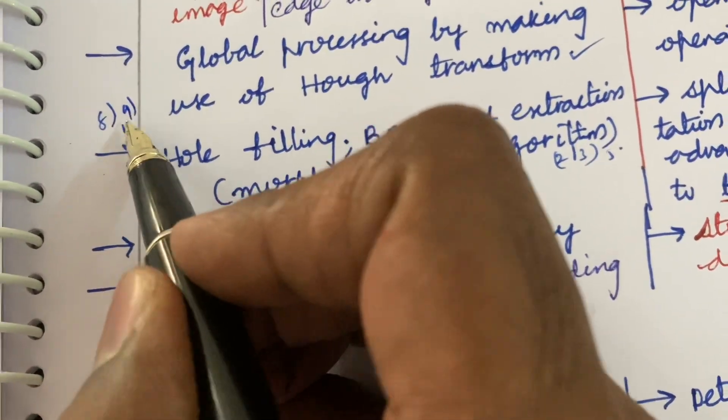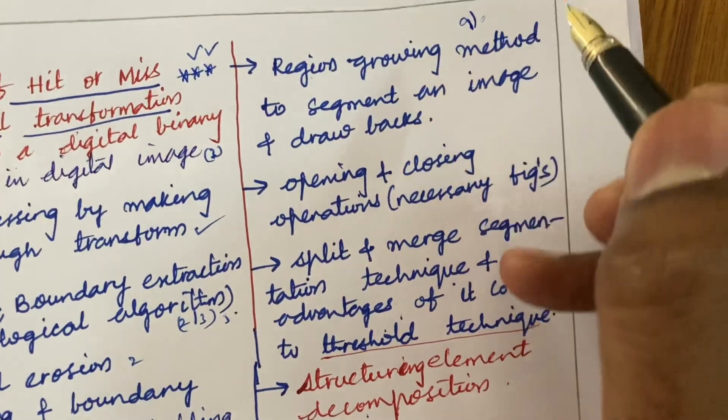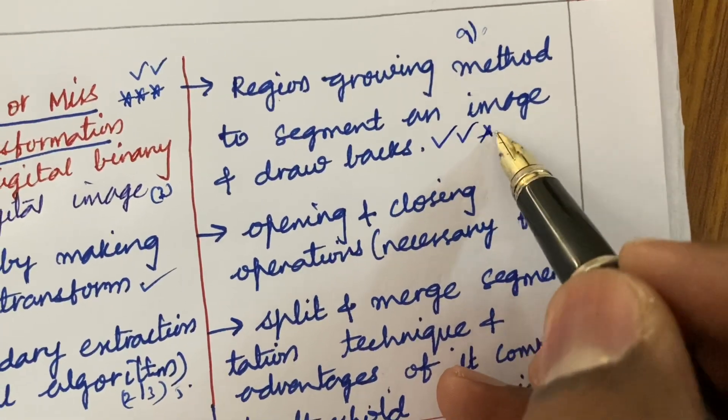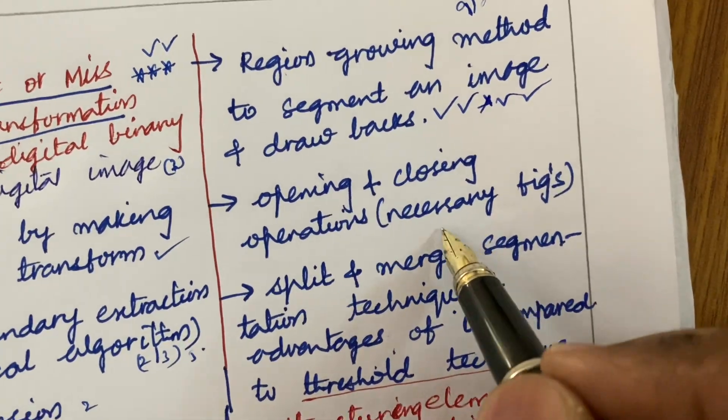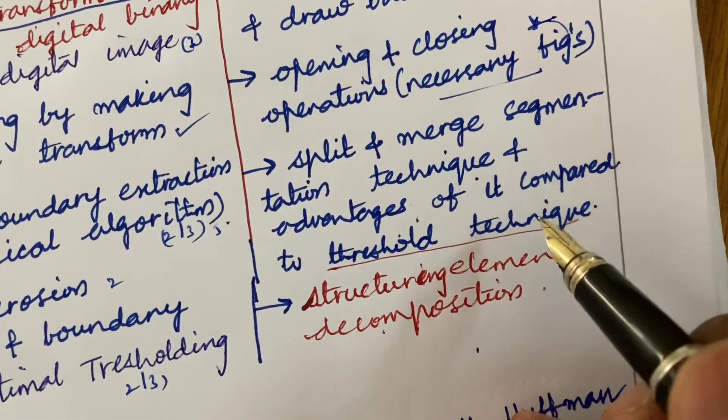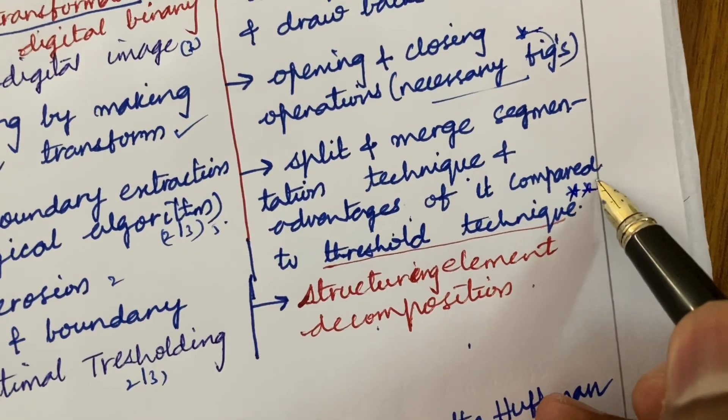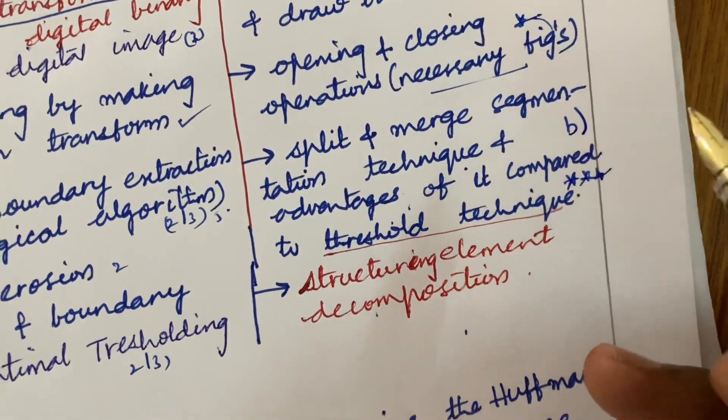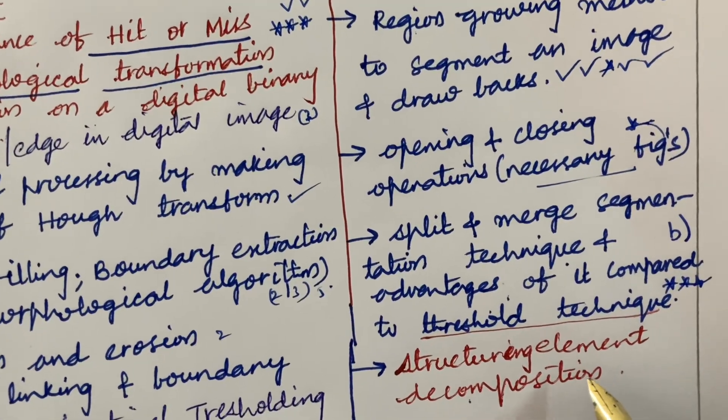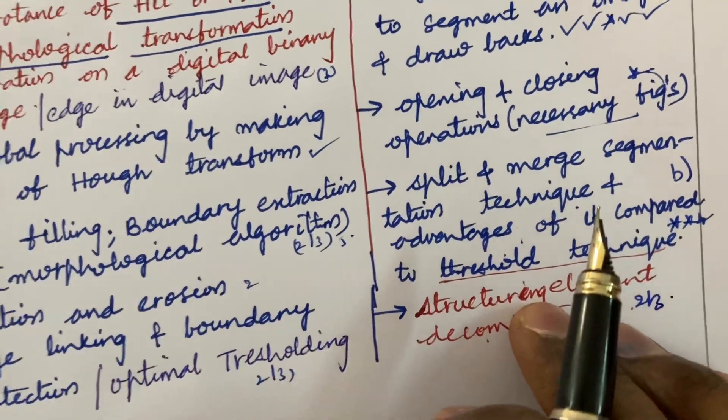From this part you can expect 8AB as well as now let's look into 9A and B combination questions. Region growing method to segment an image and drawbacks is said to be a topmost question and the opening and closing operations and necessary figures along with the necessary figures. Split and merge segmentation technique and advantages of it compared to the threshold technique related to threshold technique. The question may be 9B this time in your question paper for sure. I can give you a guarantee, gunshot question. Structuring element decomposition may be a 2 mark, 3 mark question. Till now I have covered 9 questions.